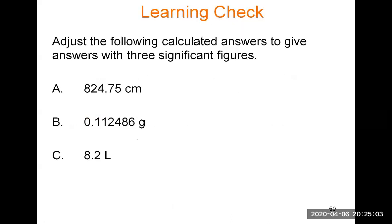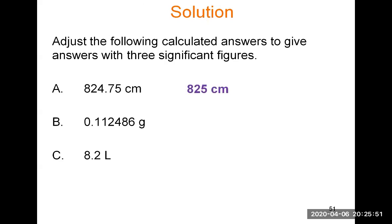Let's do a learning check — please pause the video and work this before watching the answer. Adjust 824.75 cm to three significant figures. Counting from the left, we keep 8, 2, and 4. What comes after the 4 is a 7, so we round the 4 up to a 5, then drop the rest. Because the 5 is in the ones place, the answer is 825 cm.